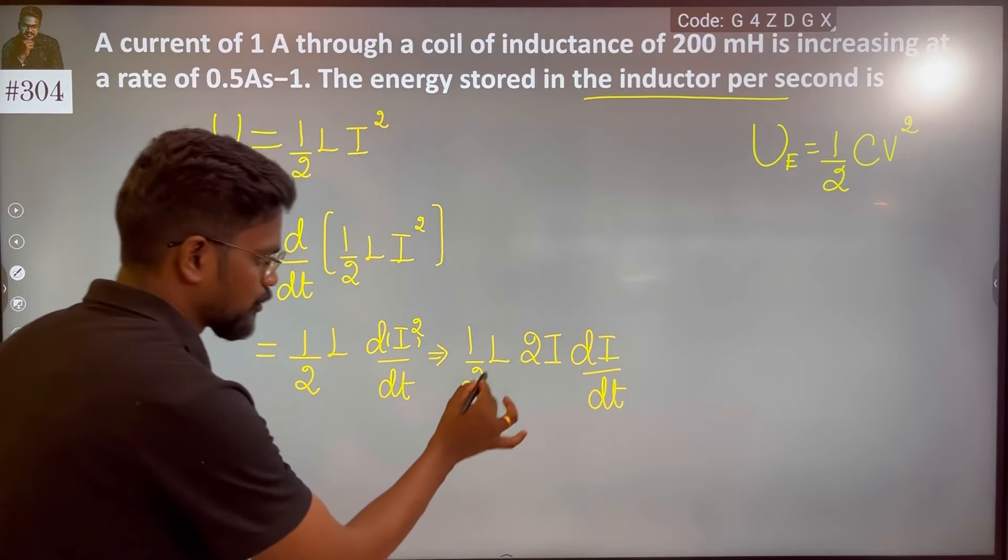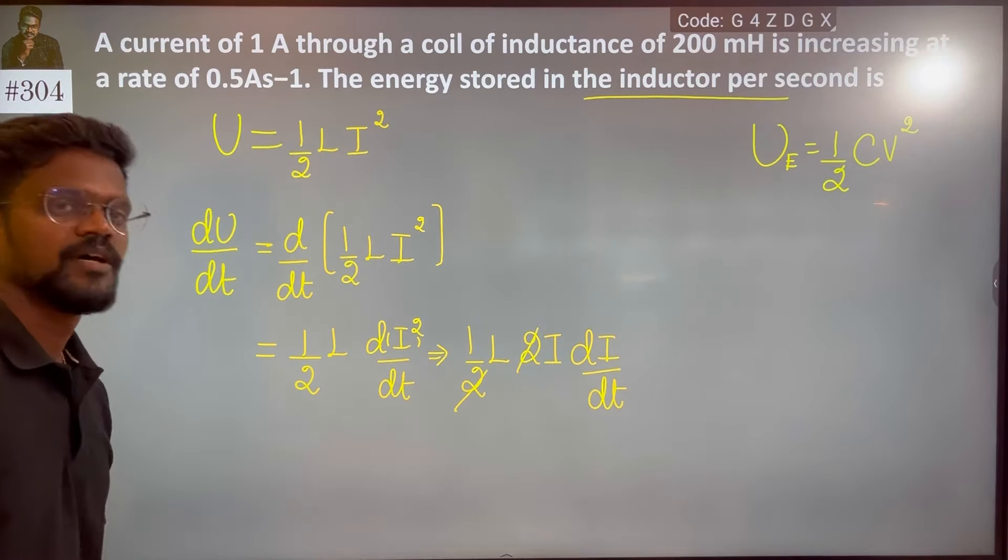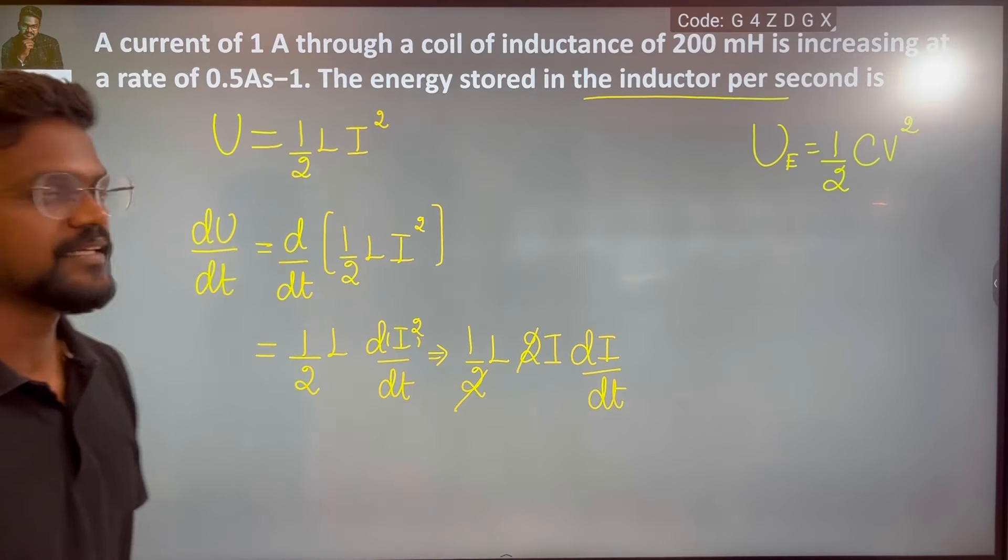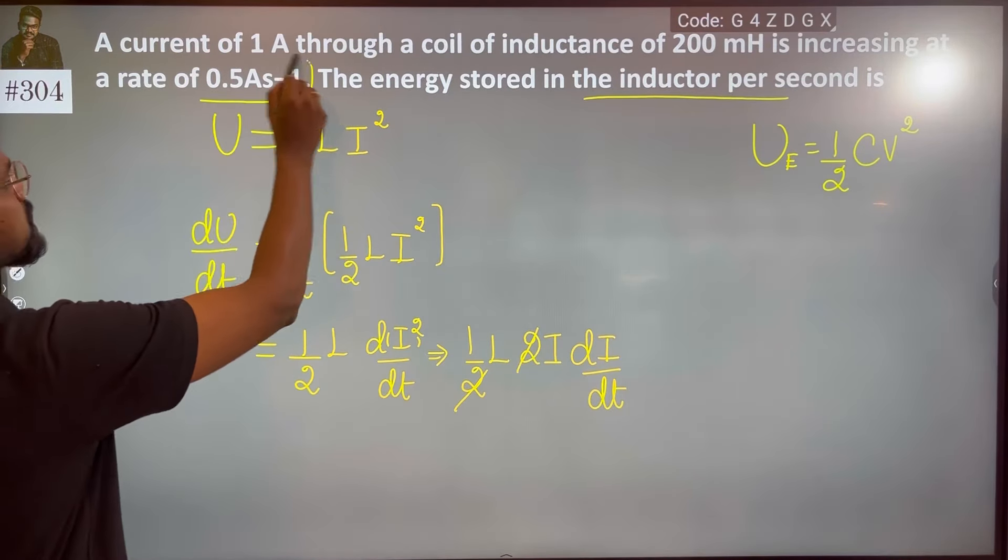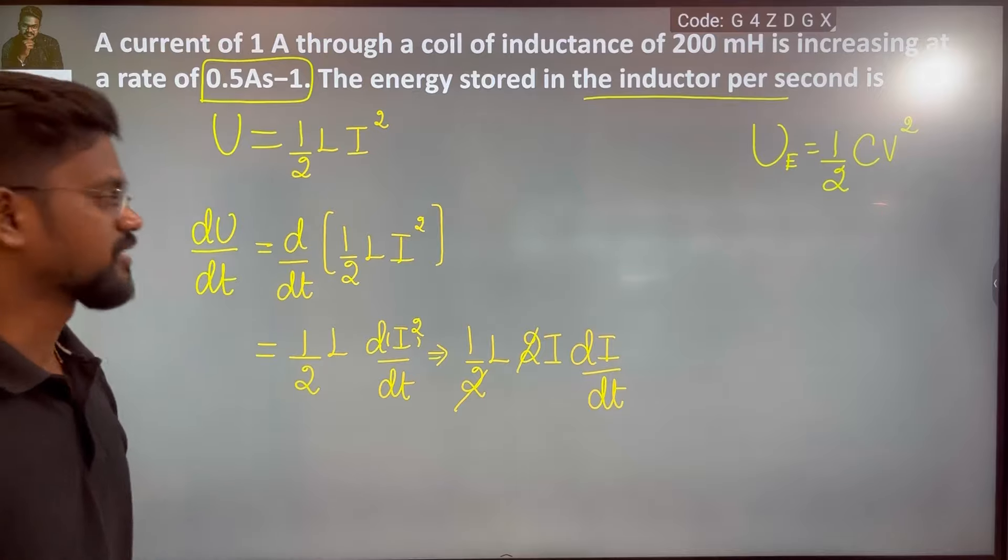Now, the 2 cancel it. So, remaining is L, there is di by dt, so di by dt is here, 0.5 Ampere per second.